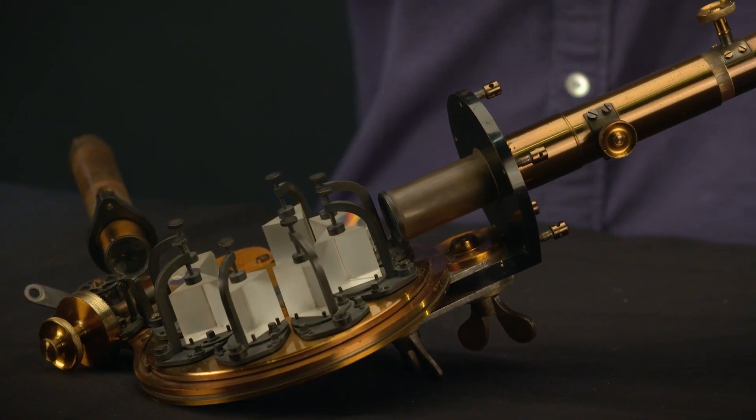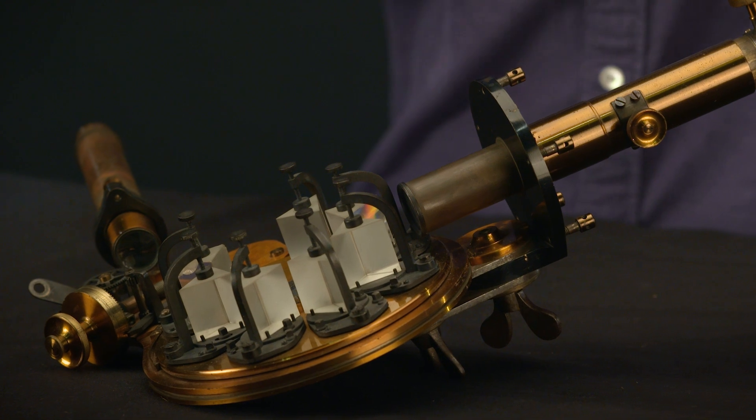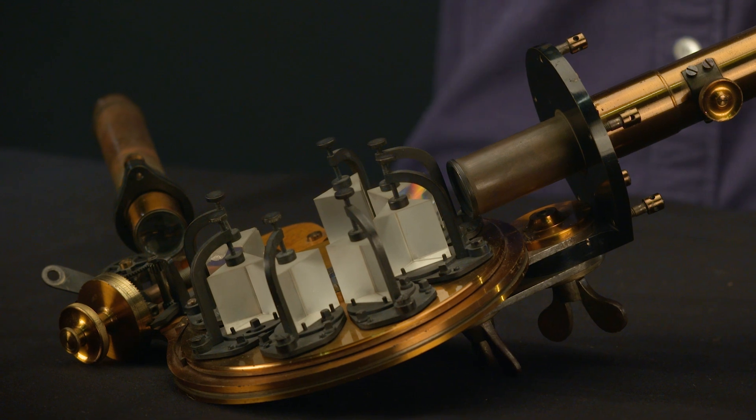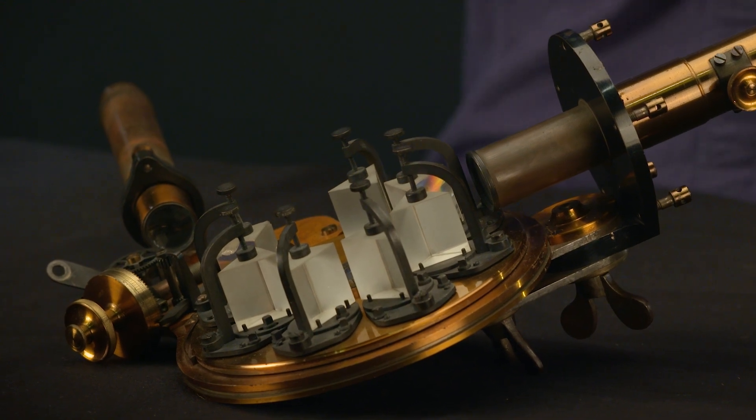These dark lines are unique identifiers of different chemical elements like hydrogen, oxygen, or carbon. Lockyer used this spectroscope to spot a new line in the spectrum of sunlight.